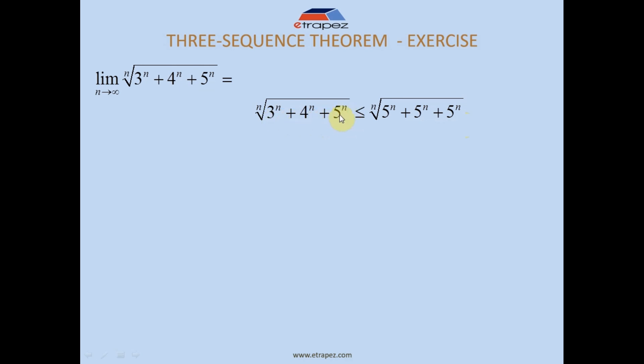Each of these constants in this upper bounding sequence you replace with the largest one to the nth power. So instead of 3^n I write 5^n, instead of 4^n I write 5^n, and I rewrite 5^n as 5^n. We agree that this will always be greater than that, right? Logical - this is always a larger number than that, no matter what n we set.